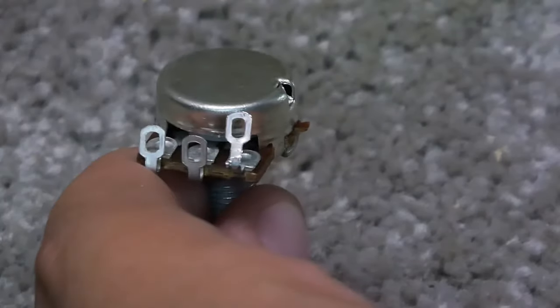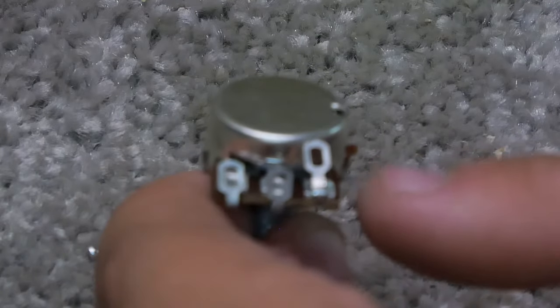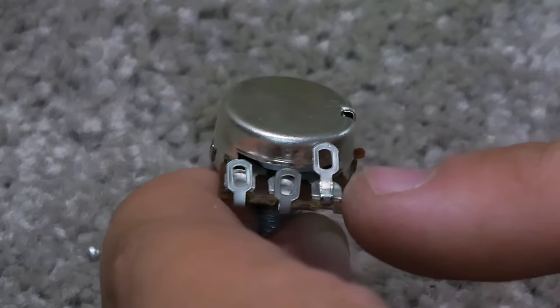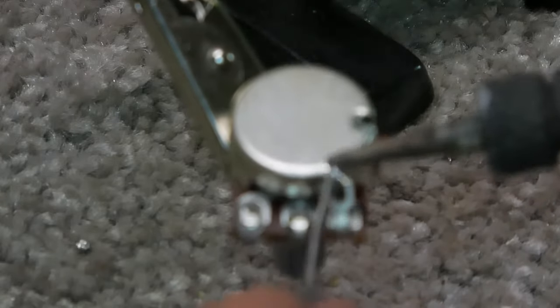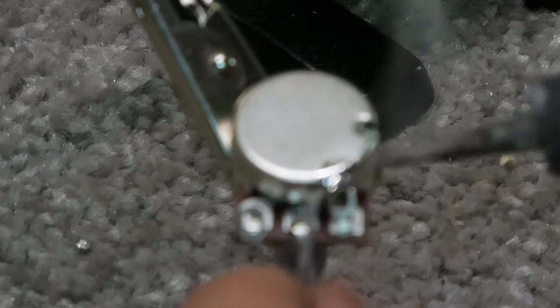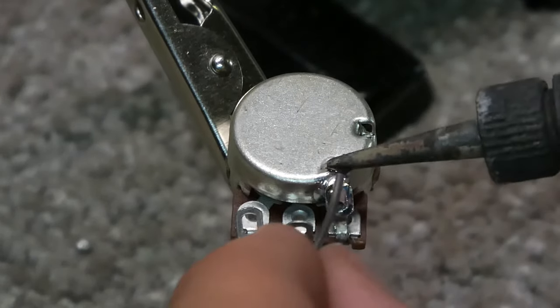Now, before we go any further, I forgot to do this in the video, but then I realized halfway through. What I want you to do is grab your right leg of the volume pots and I want you to bend it up so it's touching the metal part of the pot. Then the next part I want you to do is I want you to solder the two together so they make connection between this leg and the back of the pot because this will be our ground connection.